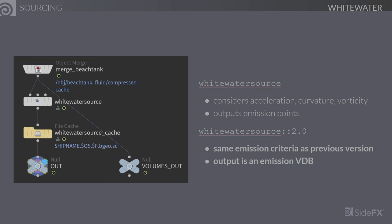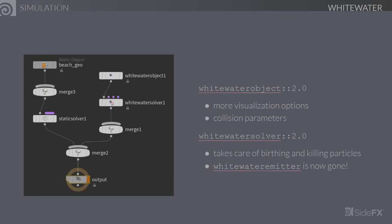We've retained all of the same criteria, namely acceleration, curvature, and vorticity, for identifying regions where whitewater should appear. On the simulation side, the number of relevant nodes has been reduced. We now have whitewater object 2.0, which is a container for the simulation object, mainly unchanged but with a few more visualization options for the repellents, and collision parameters now live on the object. The whitewater solver has been completely revamped and is now actually responsible for birthing and killing particles, so there's no need for another whitewater emitter. The whitewater emitter node that was previously necessary is no longer required.